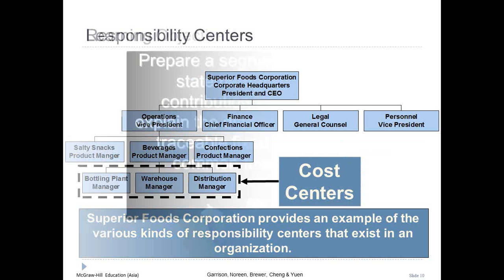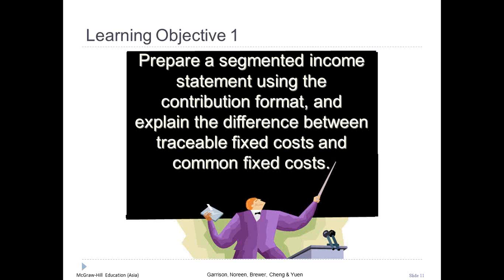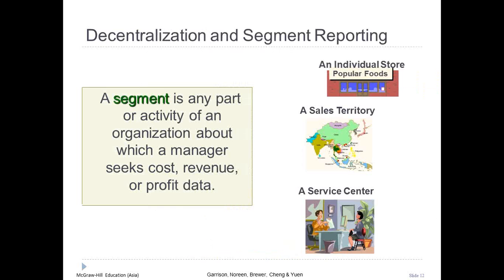Learning objective number one: prepare a segmented income statement using the contribution format and explain the difference between traceable fixed costs and common fixed costs. A segment is a part or activity of an organization about which managers would like cost, revenue, or profit data. Examples of segments include divisions of a company, sales territories, individual stores, service centers, manufacturing plants, marketing departments, individual customers, and product lines.